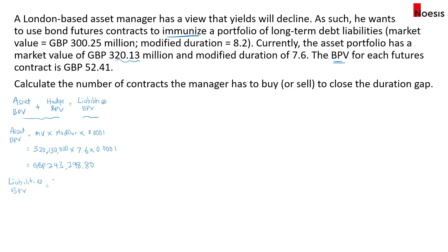For the liability BPV, we take the market value of the liability — £300.25 million — multiplied by the modified duration of 8.2, multiplied by 0.0001, which equals £246,205. We now have both of these numbers.